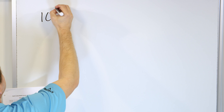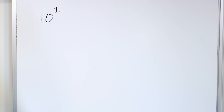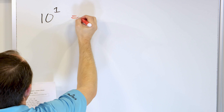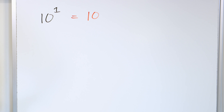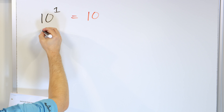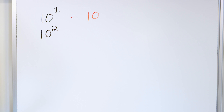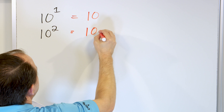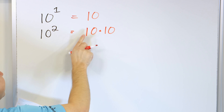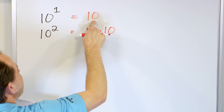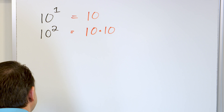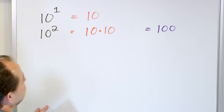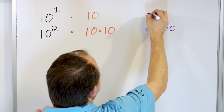We already know that 10 to the power of 1 means it's multiplied by itself, but there's only one of them, so it's really just 10. What comes next is 10 to the power of 2. This is just an exponent like any other we've studied, so that would be 10 times 10. If you calculate the answer, 10 times 10 is 100. So 10 to the power of 1 is just 10, and 10 squared equals 100.